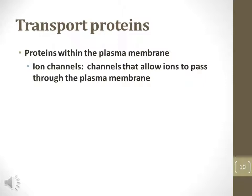Transport proteins may form ion channels that can be used for transport. Ion channels are specific for each ion. For example, sodium ion channels only allow sodium to pass across the membrane, and potassium ion channels only allow potassium to pass through the channels.